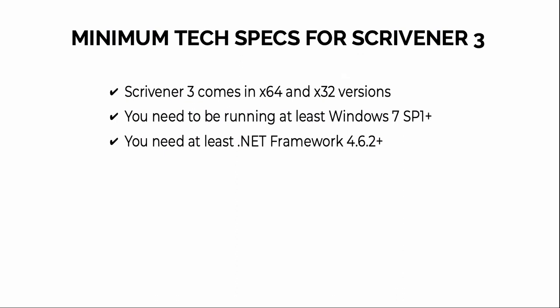There are some minimum technical specifications you need for running Scrivener 3. It comes in either a 64-bit or a 32-bit version, and the default on the website is to download the 64-bit version. You also need to be running at least Windows 7 Service Pack 1 or above, and you need at least the .NET framework 4.6.2 or above. Finding out which .NET framework you have is pretty technical, so if you have trouble installing Scrivener 3 that may be a possible reason.